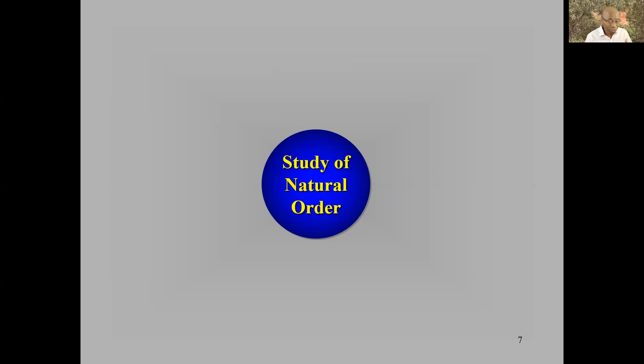So the intellectual pursuit, the first intellectual pursuit, is to understand order. Is order natural? Does it emerge naturally? How does it become natural? How, when disorder seems to be the go-to position?